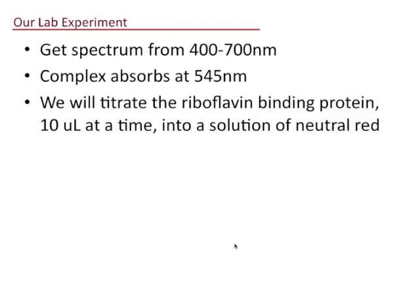In our experiment, we're going to take a spectrum on the spectrophotometer from 400 to 700 nanometers. The complex absorbs at 545 nanometers. We're going to titrate the riboflavin binding protein, 10 microliters at a time, into a solution of neutral red. We put neutral red solution in the cuvette, titrate in riboflavin binding protein, 10 microliters at a time. Let's go over to the lab and show you what that looks like.